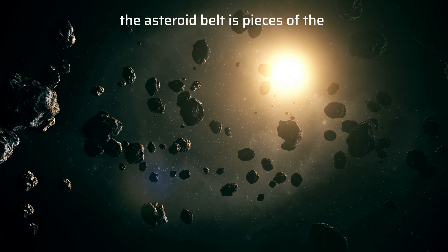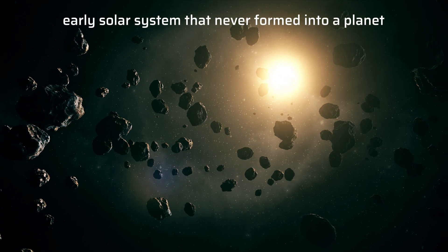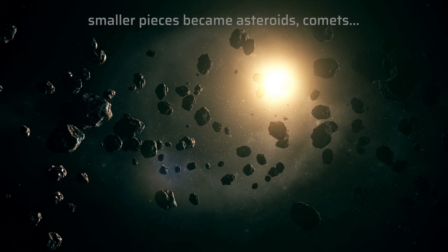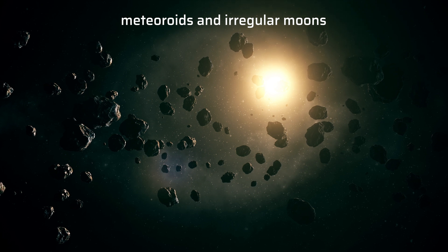The asteroid belt is pieces of the early solar system that never formed into a planet. Smaller pieces became asteroids, comets, meteoroids, and irregular moons.